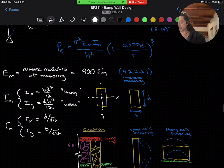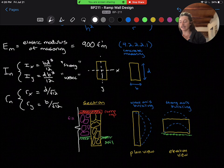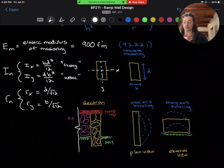So I've drawn out all of these equations for you, and you can see the ramp wall in section. In a plan view, you would see what a weak axis buckling would look like, and in elevation view, you could see what a strong axis buckling would be like.